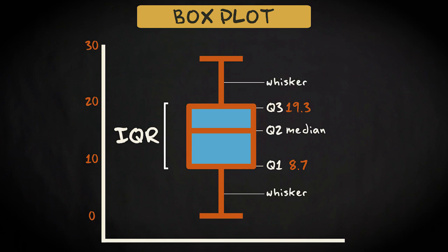These lines are called whiskers. They contain the other values except for the outliers, which are displayed separately by means of dots. There are no dots here, so this box plot shows us that we don't have any outliers.